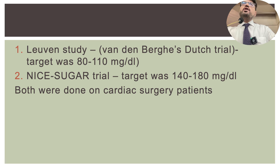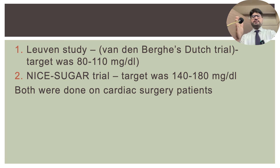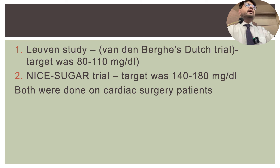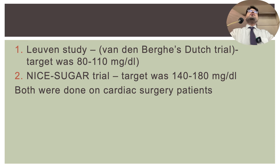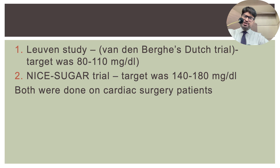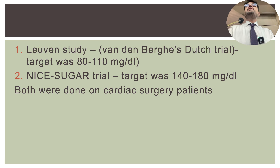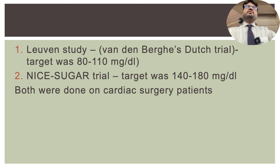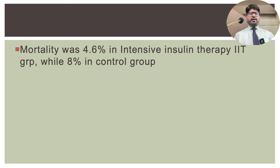After the NICE-SUGAR trial, guidelines worldwide changed. The current standard of care is to maintain blood sugar in ICU patients between 140-180 mg/dL. A follow-up study targeting up to 200 mg/dL found reasonably similar outcomes. The current guideline is therefore: in an ICU, target blood sugar should be 140-200. This doesn't mean giving glucose to non-diabetic patients whose sugar is 110 — it means targeting hyperglycemia to a range of 140-180.